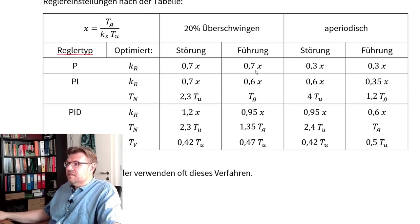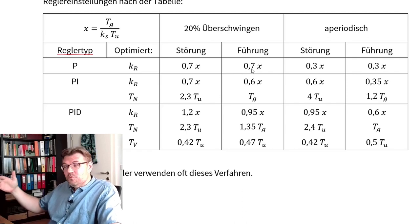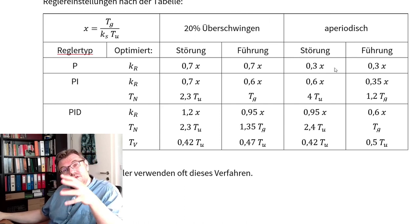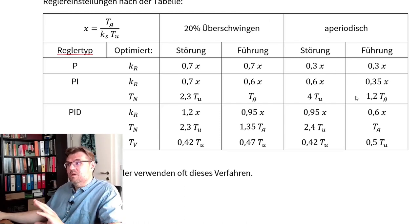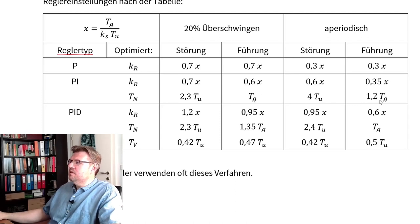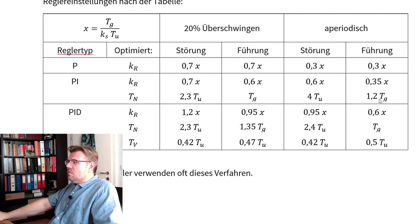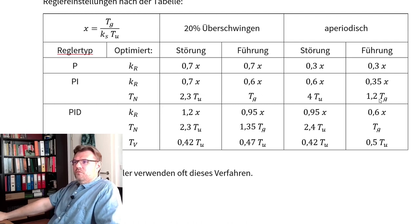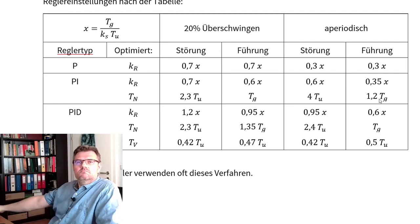You see, these are significantly smaller than this one. Remember phase reserve and so on. And if you want to have less overswing, you have to be slower in timing. Because here you see, this is just TG and this is 20% more than TG. That's it.